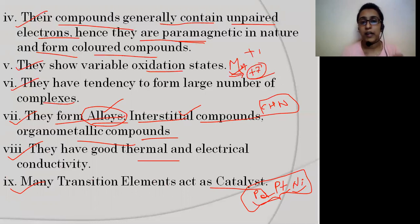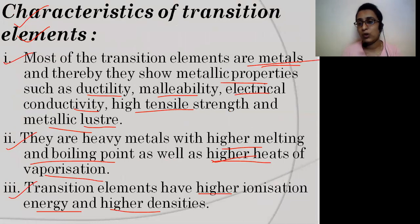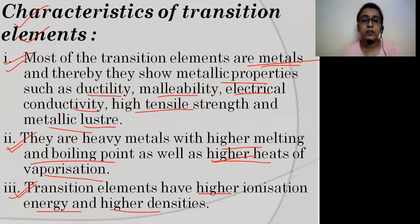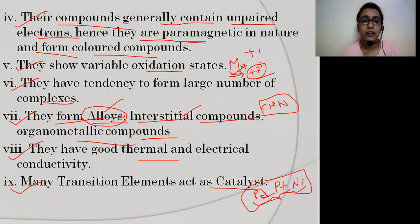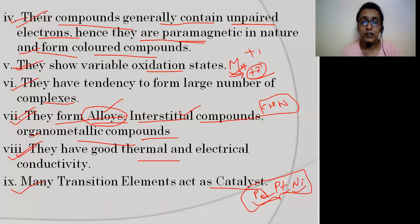If a question asks you to describe or list characteristics of transition elements, I have listed about ten here — just write four or five. To summarize: they are metals with metallic properties; higher melting and boiling points and high heat of vaporization; high ionization energy and density; variable oxidation states; paramagnetic compounds forming colored compounds; form alloys, interstitial compounds, and organometallic compounds; good thermal and electrical conductivity; and many act as catalysts.